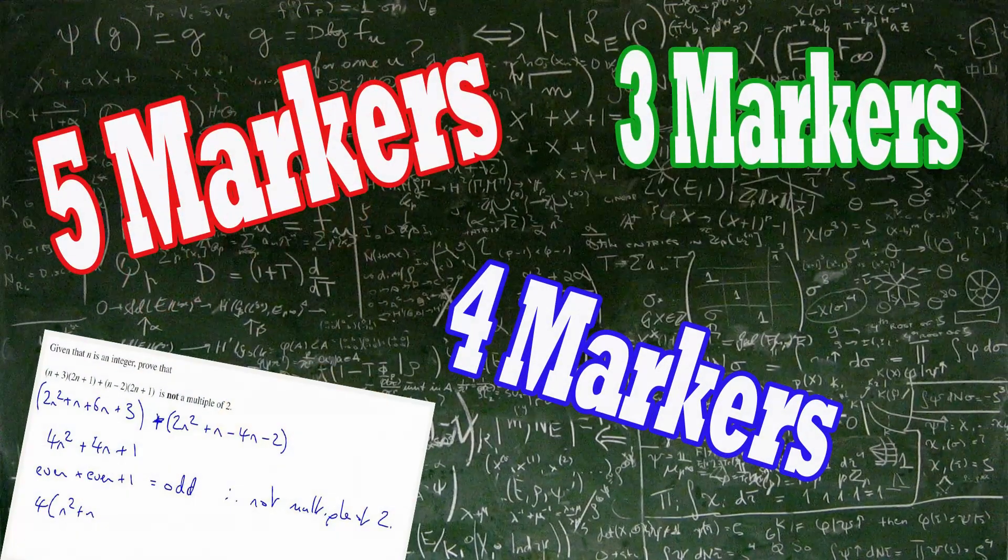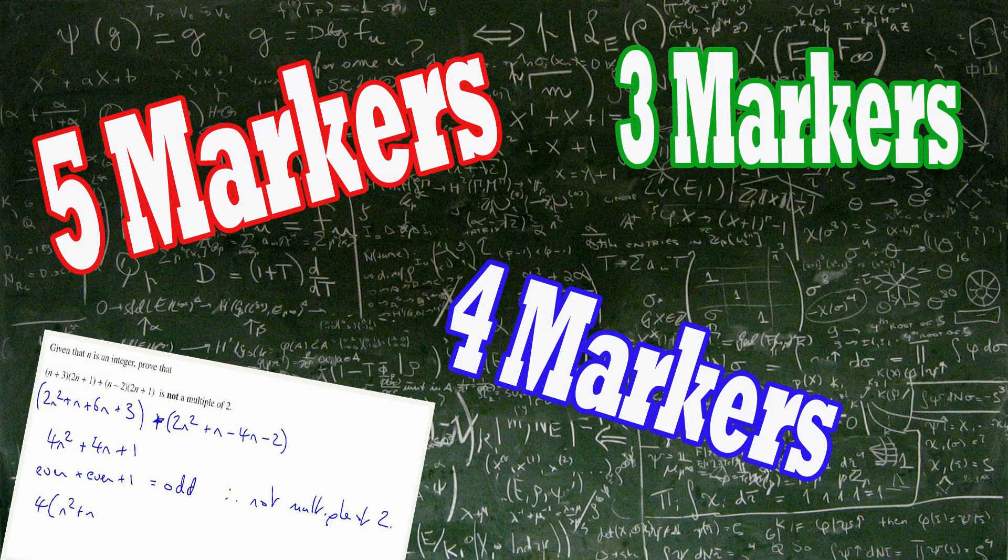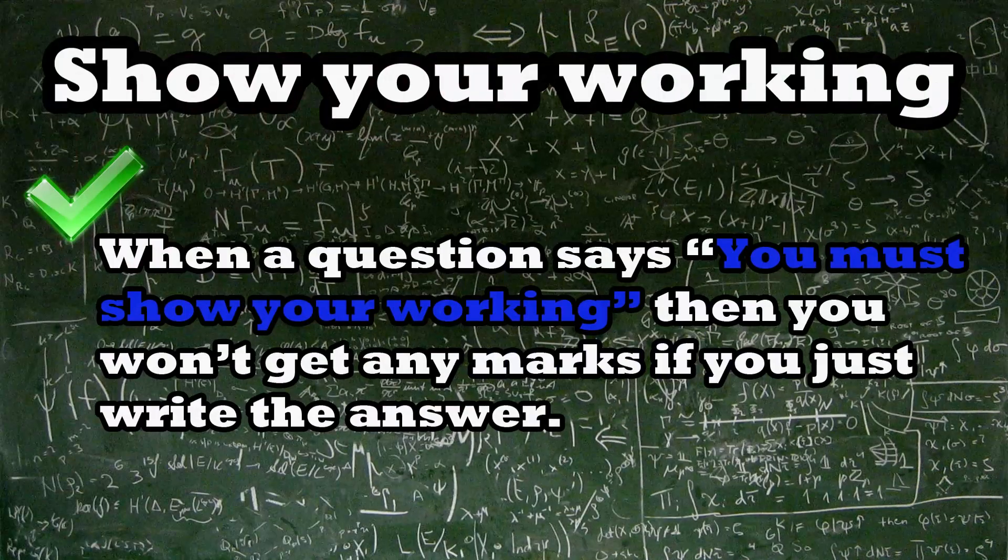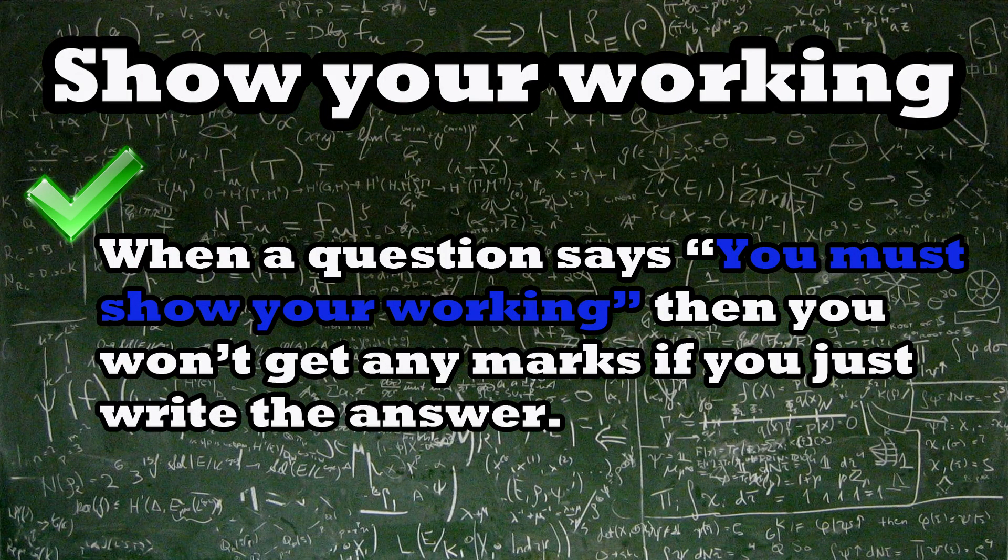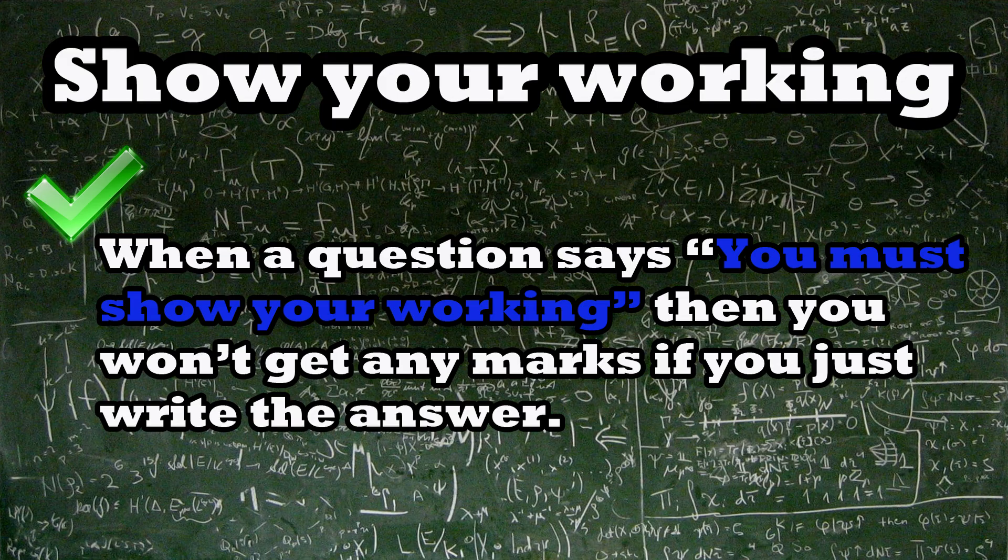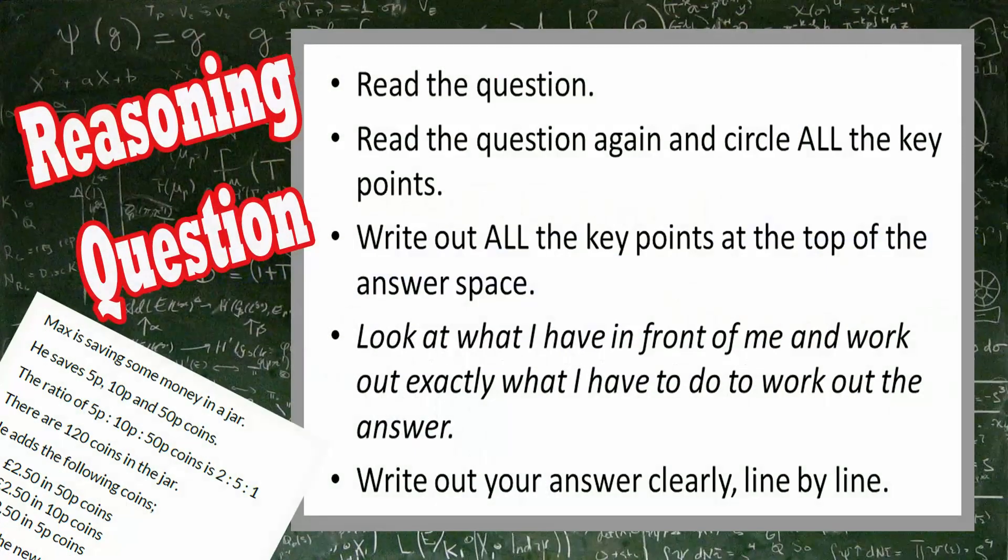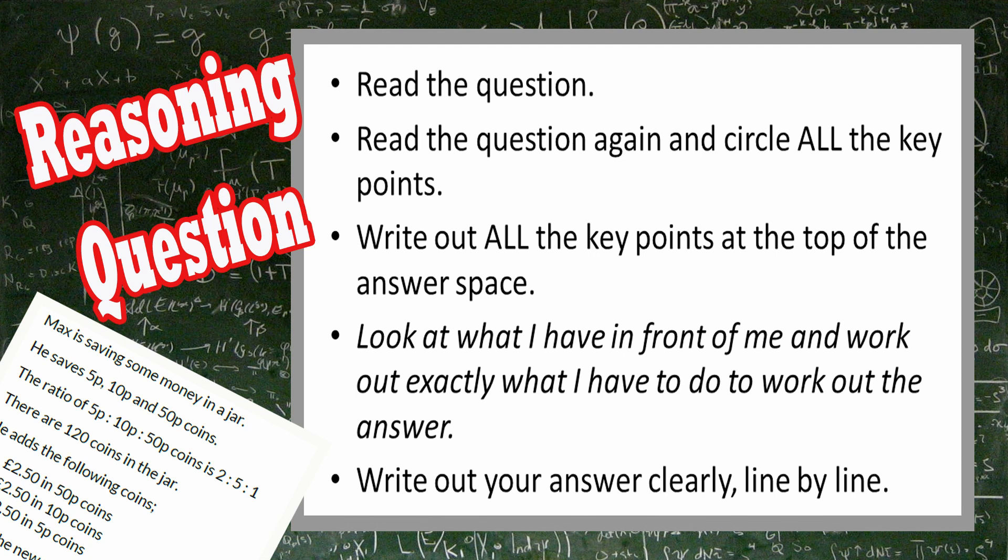Don't write any paragraph. Write down clearly all the formulas, chain rules, quadratic formulas, set theories used in the questions. In this way, you will get the method marks even if your answer is wrong. If it is a reasoning question with lots of information, read the question. Read the question again and circle all the key points. Write out all the key points at the top of the answer space. Look at what I have in front of me and work out exactly what I have to do to work out the answer. Write out your answer clearly line by line.